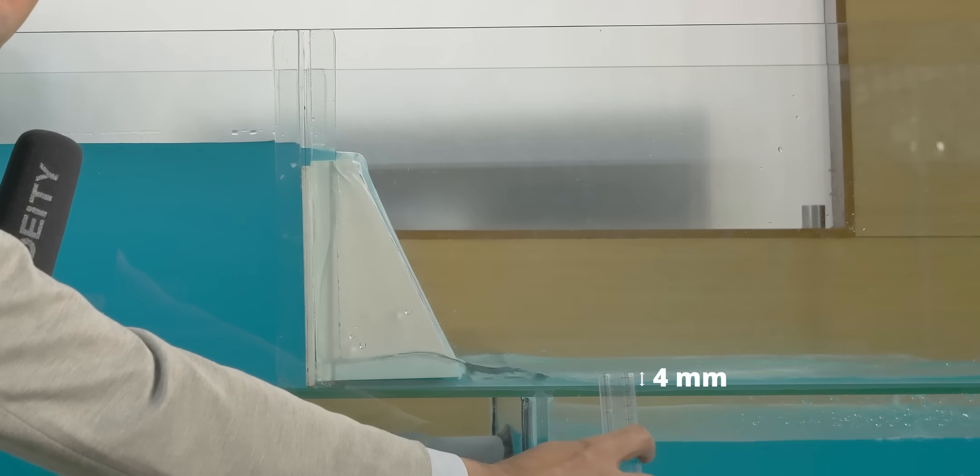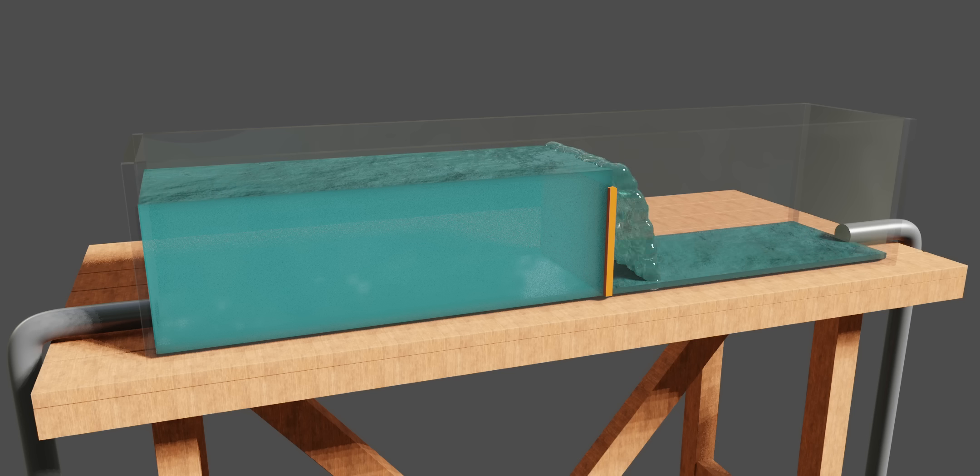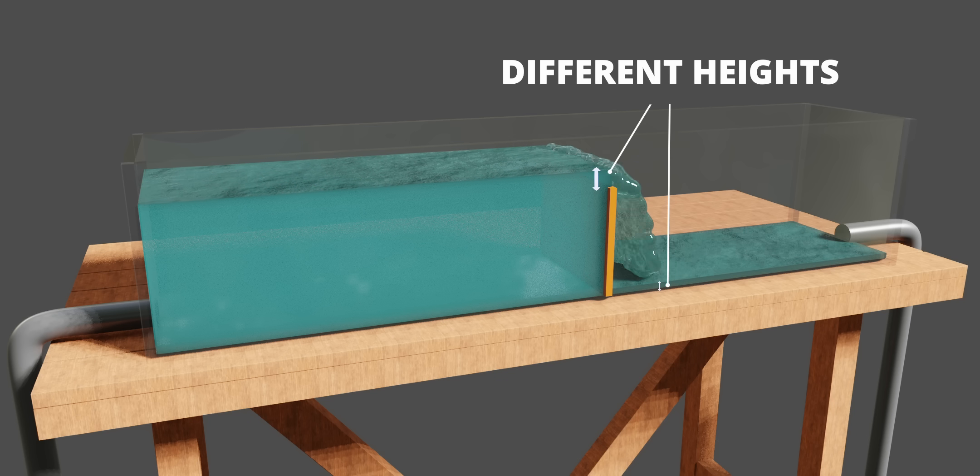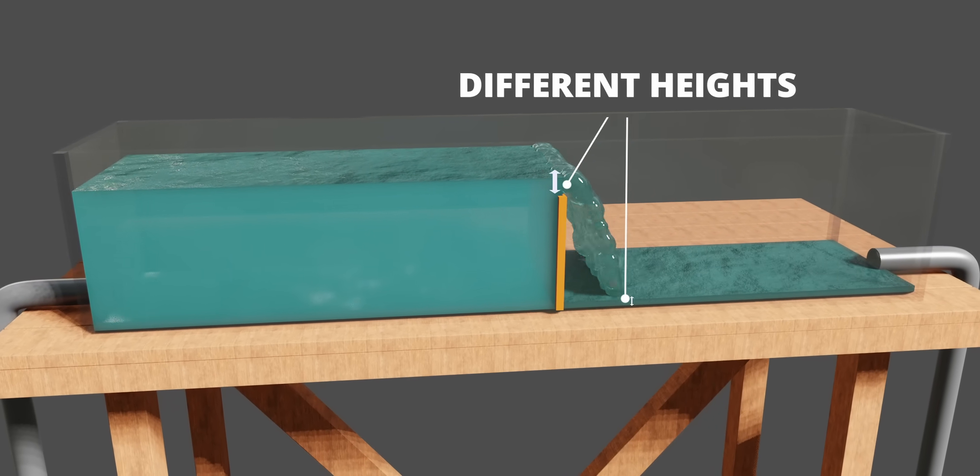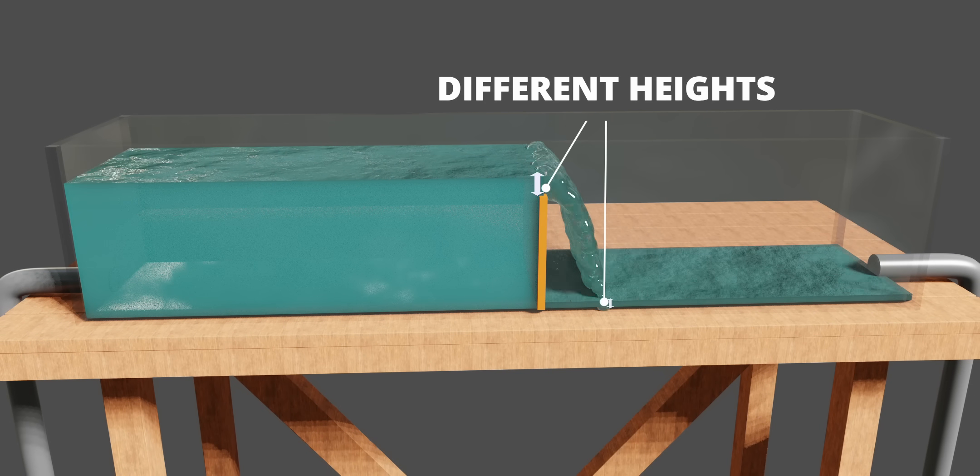At the downstream side, it is just 4 mm. It has decreased. Are you wondering why this sudden increase and decrease in water level height happens? We'll explore the fascinating physics behind this towards the end of this video.